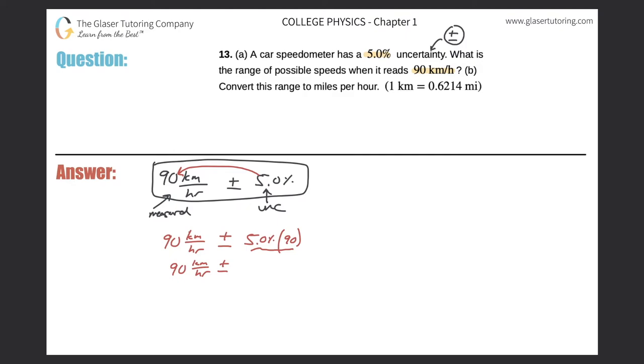Just move the decimal point two places to the left and then take that percent and the decimal form that is 0.05 multiplied by 90. And that should come out to a value of 4.5.